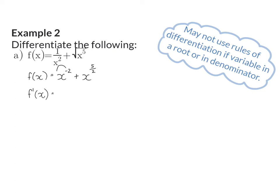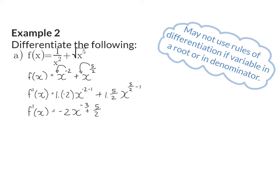For my first term, I am going to multiply the exponent of minus 2 in front, so it is going to be 1 times minus 2, and in the exponent, I am going to subtract another 1. For my second term, I am going to take the exponent and multiply the 1 in front with 5 over 2, and in the exponent, I will have 5 over 2 minus 1. So, my final derivative will be equal to minus 2 multiplied by x to the power of minus 3, plus 5 over 2 times x to the power of 3 over 2.